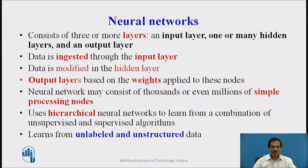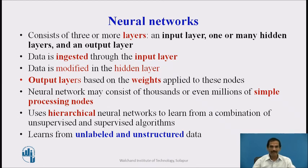Now we go into learning using neural networks. A neural network has more than two layers of learning. The first layer is called the input layer and the second is the output layer. Between these two, there is an intermediate layer called the hidden layer. Data is ingested through the input layer, modified and transformed by the hidden layer, and the output layer is based on the weights applied to the nodes. Thus, a weighted output is generated for this environment.